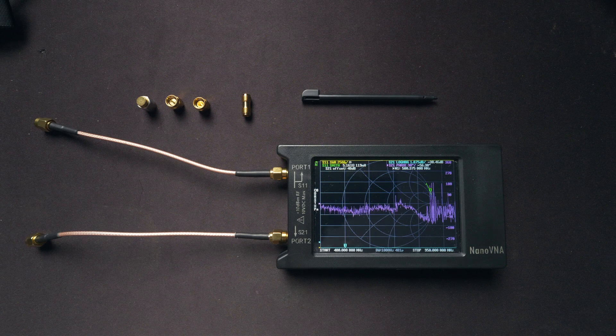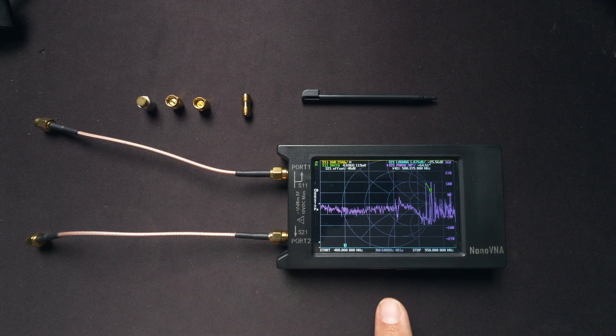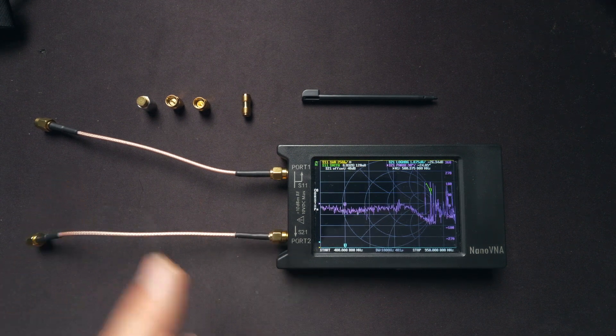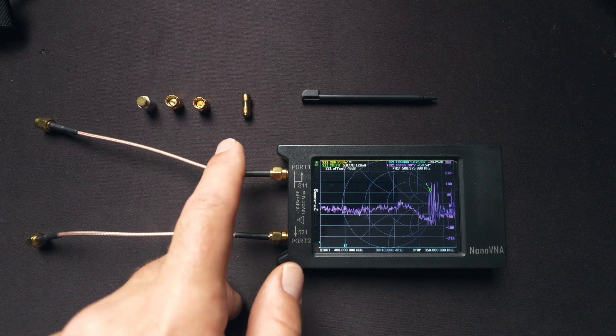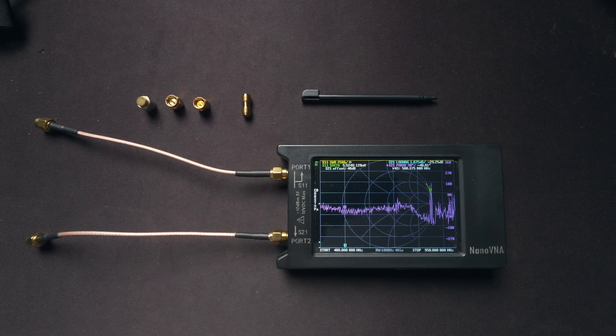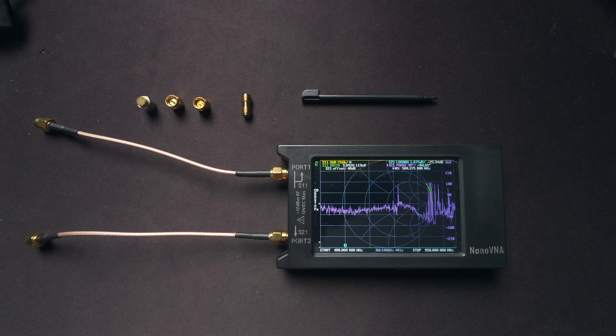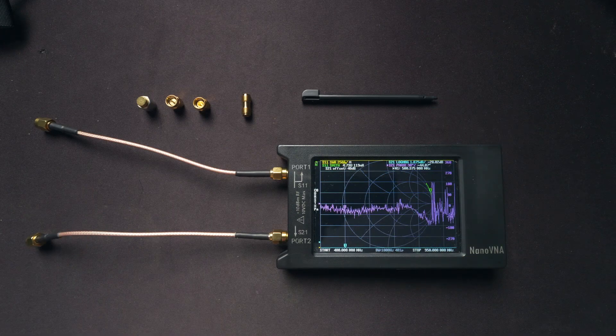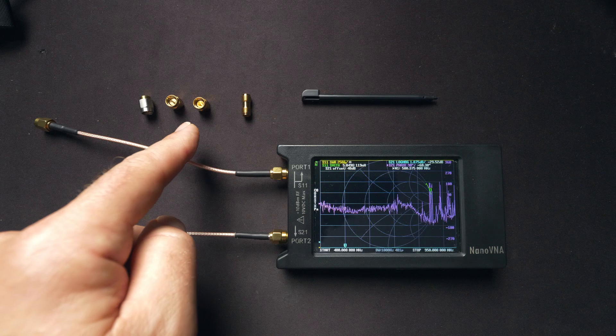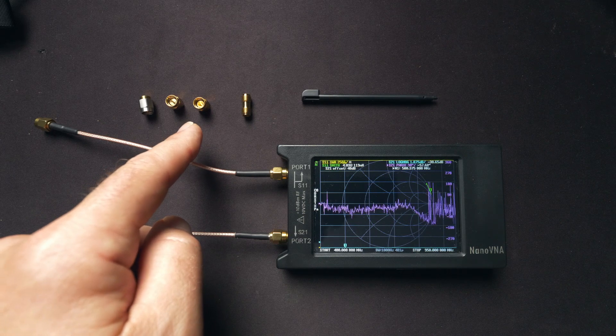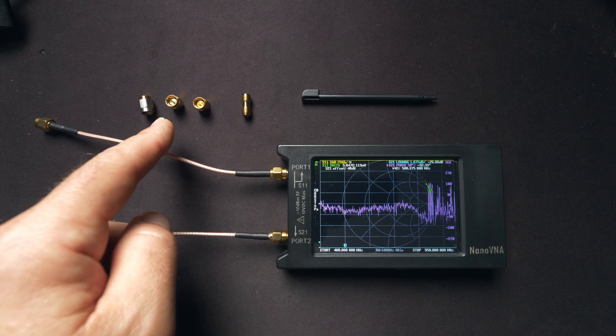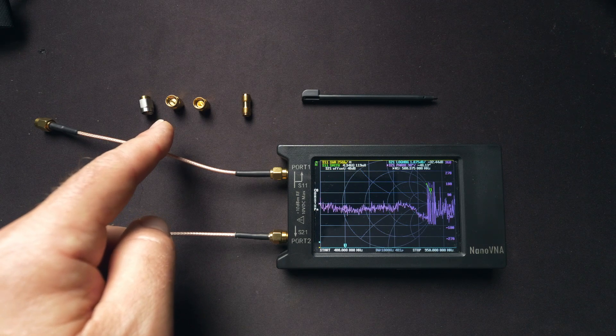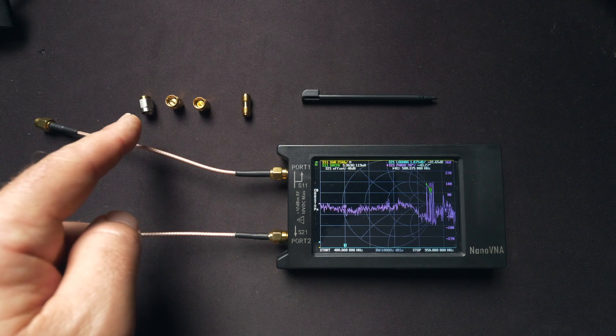When you purchase the NanoVNA, you would have received the NanoVNA, also these two short coaxial lines with SMA connectors, also the SMA barrel that you see here, the female barrel on both sides, a stylus, and three terminal caps, one of which is an open where the center conductor does not make contact, the other of which is a short which has a center conductor and shield making contact, and then a 50-ohm load.